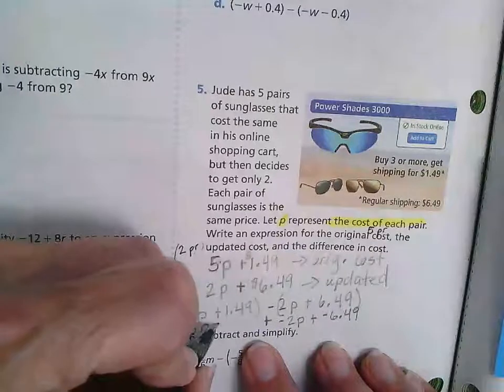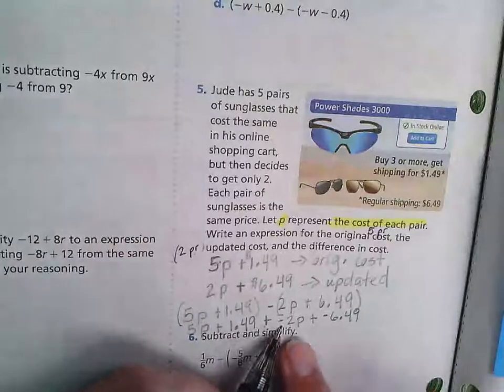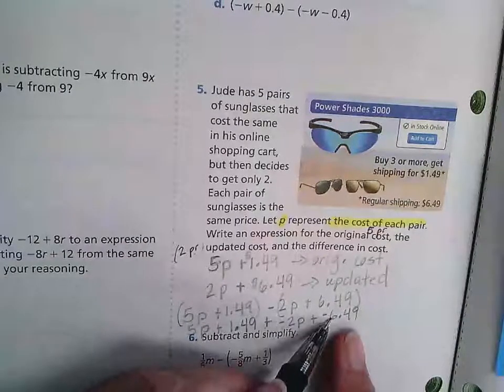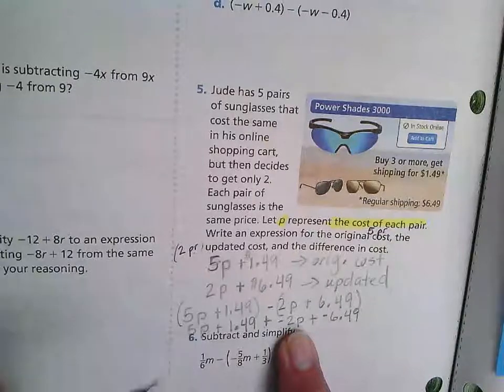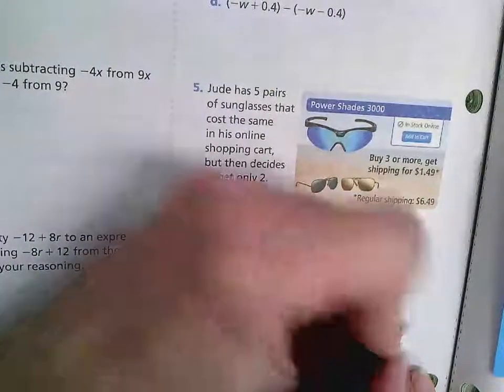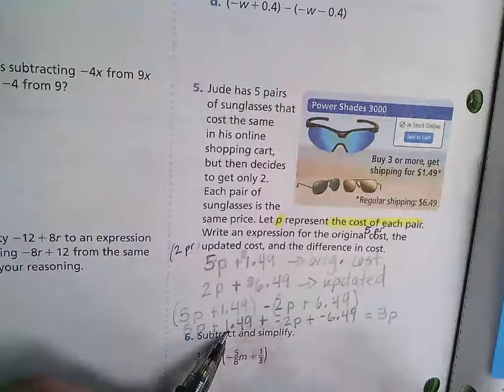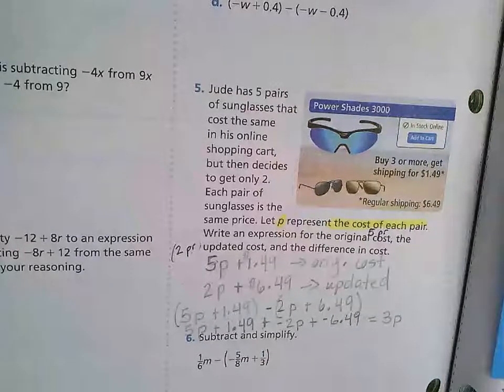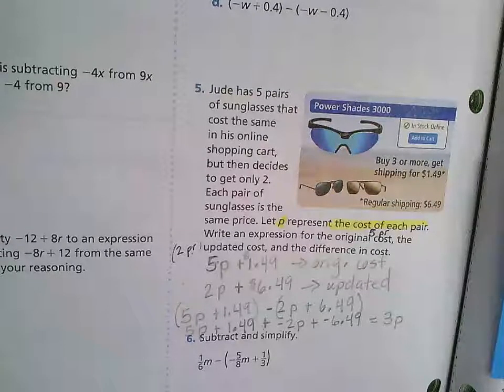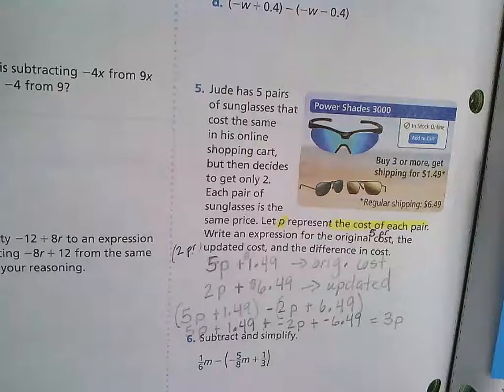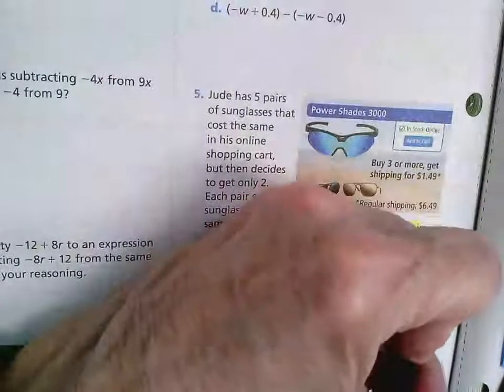So 5p plus $1.49 plus a negative 2p plus negative $6.49. So when I add my 5p and my negative 2p together, I get 3p. And then I'm going to take my positive $1.49 and my negative $6.49. And I get $5.00, but it's a negative.